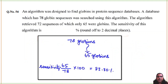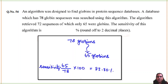Tenth question: an algorithm was designed to find globins in protein sequence databases. The database has 78 globin sequences. The algorithm retrieved 72 sequences, of which 65 were actual globins. The sensitivity of this algorithm = 65/78 × 100 = 83%. Very simple calculation.